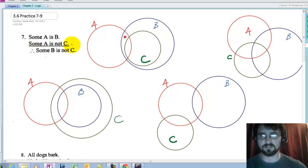There's an A that is also a B. Some A is not C. Actually, that block where it's at works perfect because it's not C. So I've drawn both the premises.